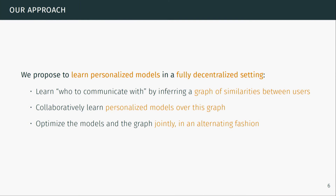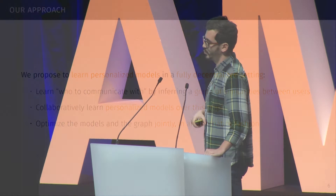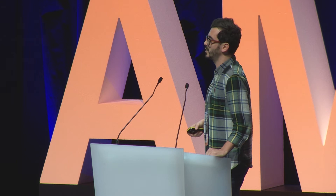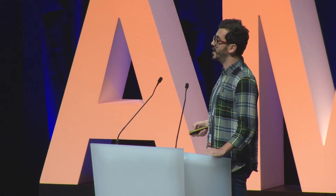I'm going to present an approach where we learn personalized models in a fully decentralized setting. We learn who to communicate with by inferring a graph of similarities between users — identifying who is similar to whom, so we don't waste communication exchanging information between users with nothing in common. We then learn personalized models collaboratively over this graph, such that models are personalized yet account for information from similar users. We optimize models and graph jointly via an alternating optimization scheme.